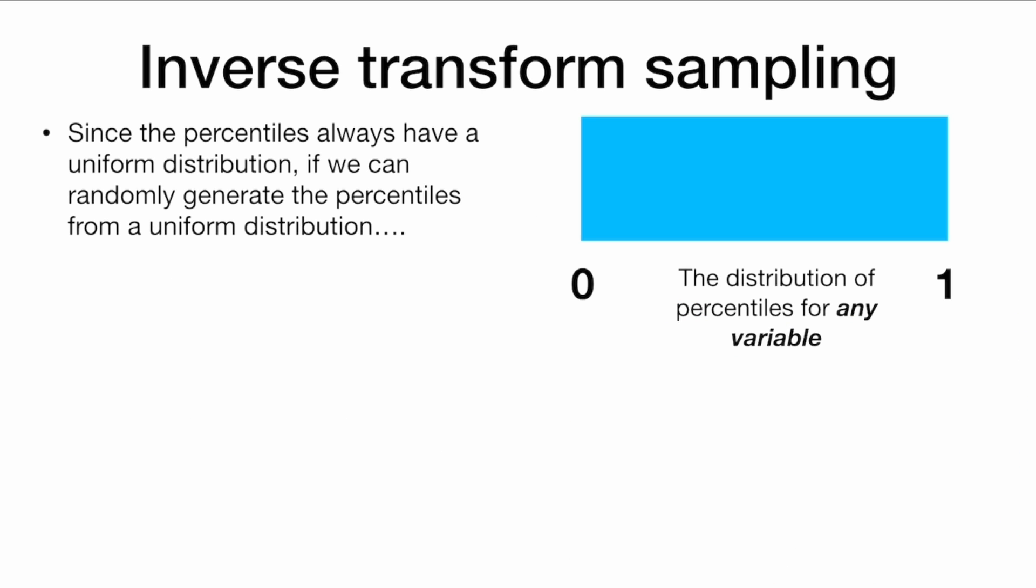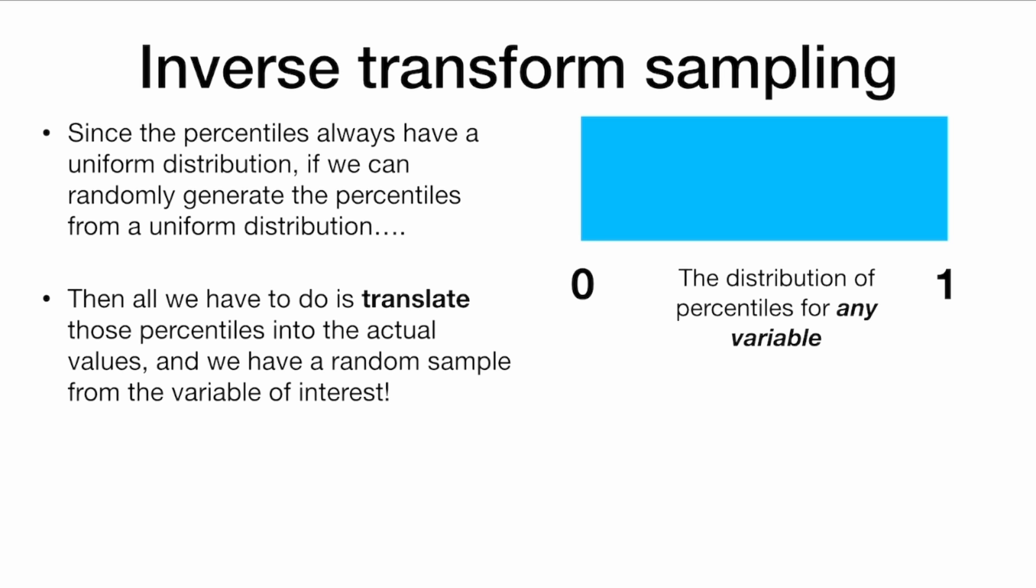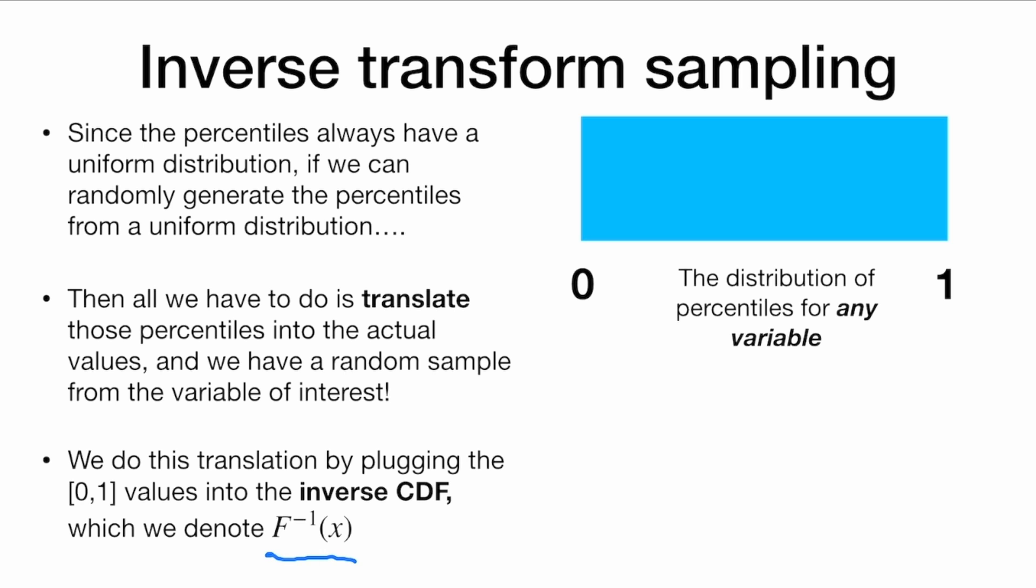So since the percentiles always have a uniform distribution, if we can randomly generate the percentiles from a uniform distribution, then all we have to do is translate those percentiles into the actual values, and we have a random sample from the variable of interest. And we do this translation by plugging the 0 to 1 values into the inverse CDF, which we will denote as F inverse.